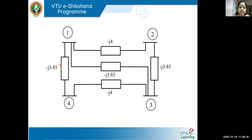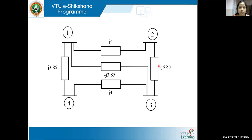The summation of all three lines connected to bus one gives Y11. Similarly, Y22 will be y12 (minus j4) plus y23 (minus j3.85). Y33 will be three line admittances added, and Y44 will be two line admittances. This covers the diagonal elements. Since we have a four-bus system, the Y bus matrix will be a four-by-four matrix. The off-diagonal elements are going to be the negative of the series admittances.